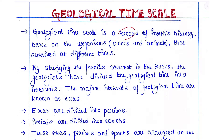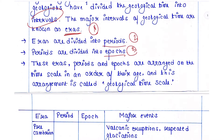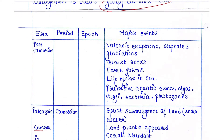Geological time scale is basically a record of Earth's history based on organisms — that is, plants and animals — that survived at different times. By studying fossils present in rocks, geologists have divided geological time into intervals. The major intervals are known as eras; eras are divided into periods; and periods are divided into epochs. These eras, periods and epochs are arranged on the time scale in order of their age, and this arrangement is called the geological time scale.